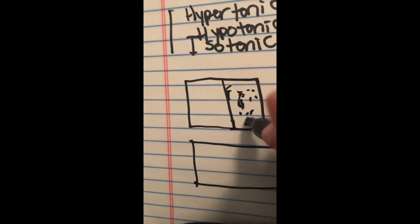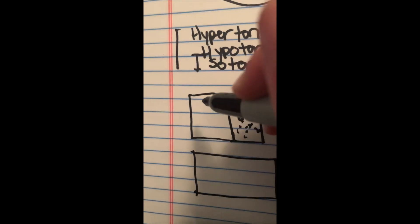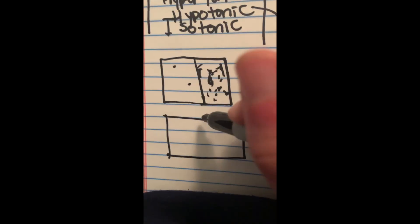but hypertonic means there is a higher concentration of solutes, or just more stuff dissolved in a space. Hypotonic means there is a lower concentration of solutes, or less stuff dissolved in the space.